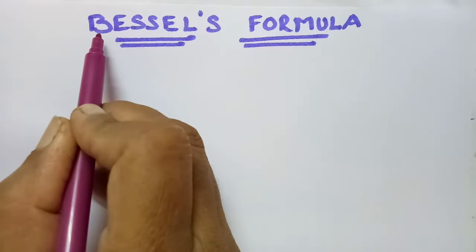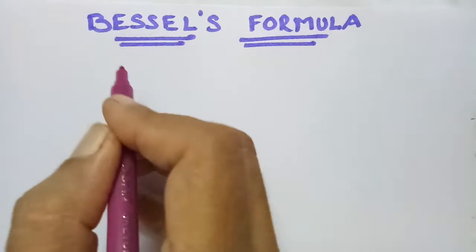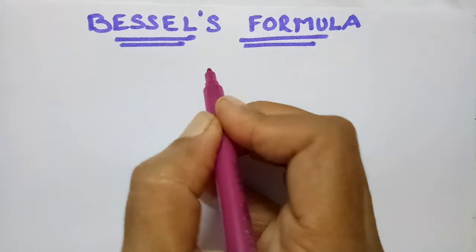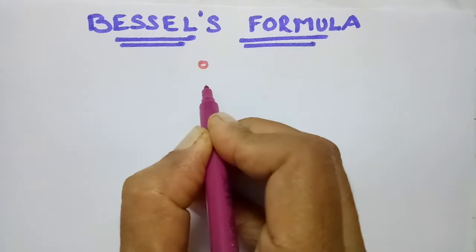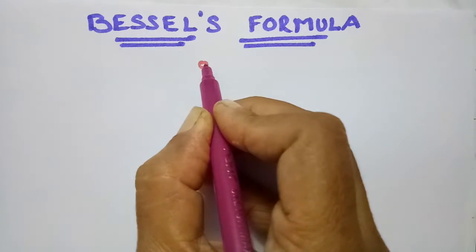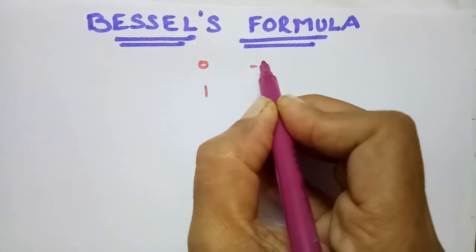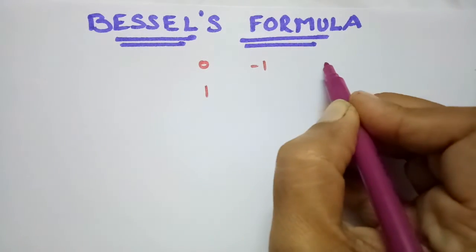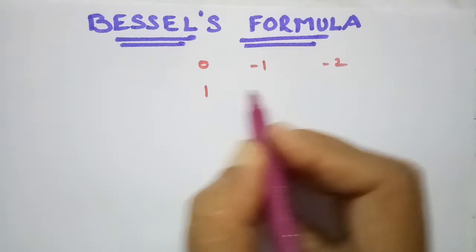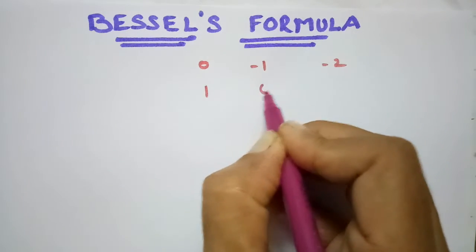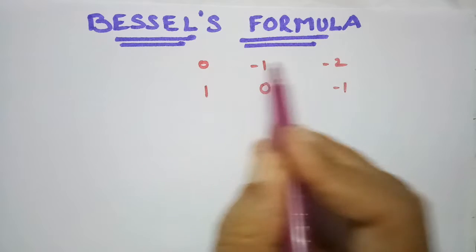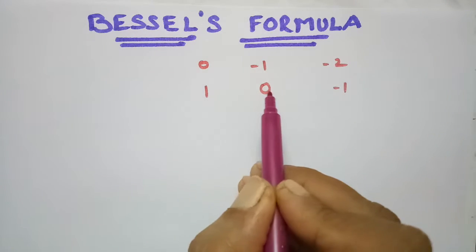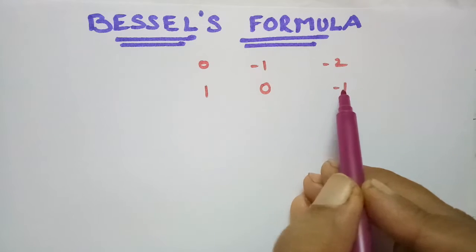B stands for bisection, so we have to take an average of 2. First of all, this is 0 and this is 1. If I keep on writing in a decreasing order: this is 0, this is minus 1, this is minus 2. Here also: 1, 0, minus 1.